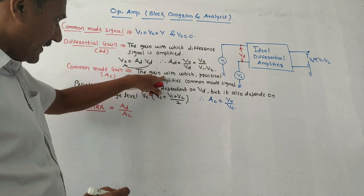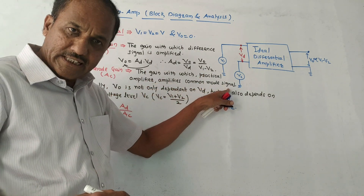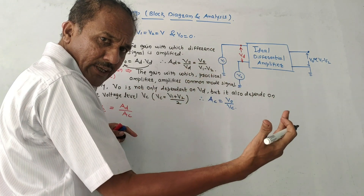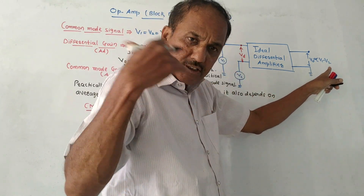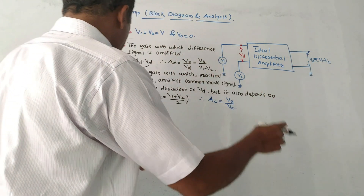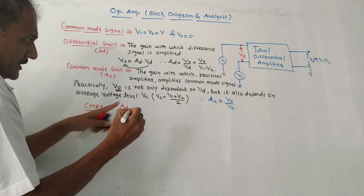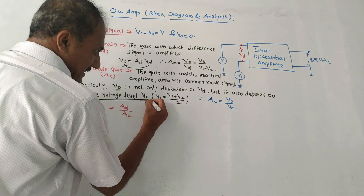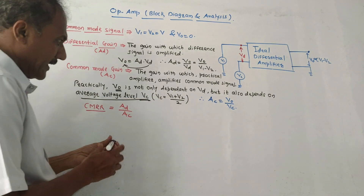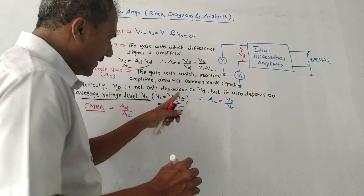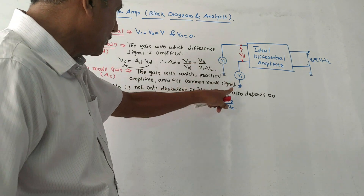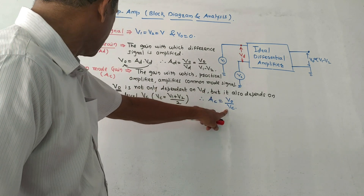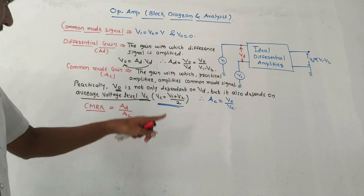Common mode gain Ac is defined as the gain with which a practical amplifier amplifies common mode signals. Practically, V0 is not only dependent on Vd — the difference voltage — but also on the average voltage level Vc. This average voltage level is calculated as Vc equals (V1 plus V2) divided by 2. So we can define Ac, that is common mode gain, as V0 upon Vc, where Vc is the average voltage level.